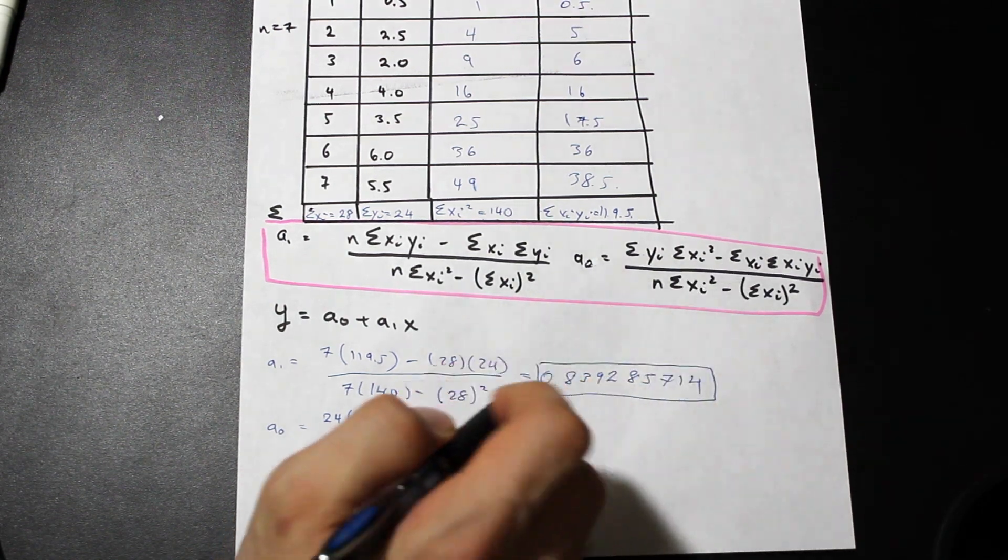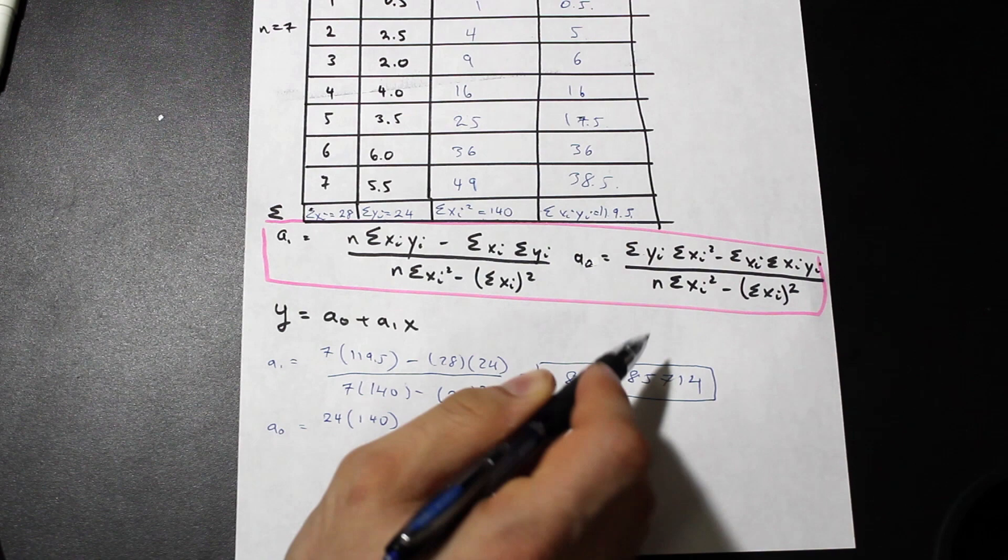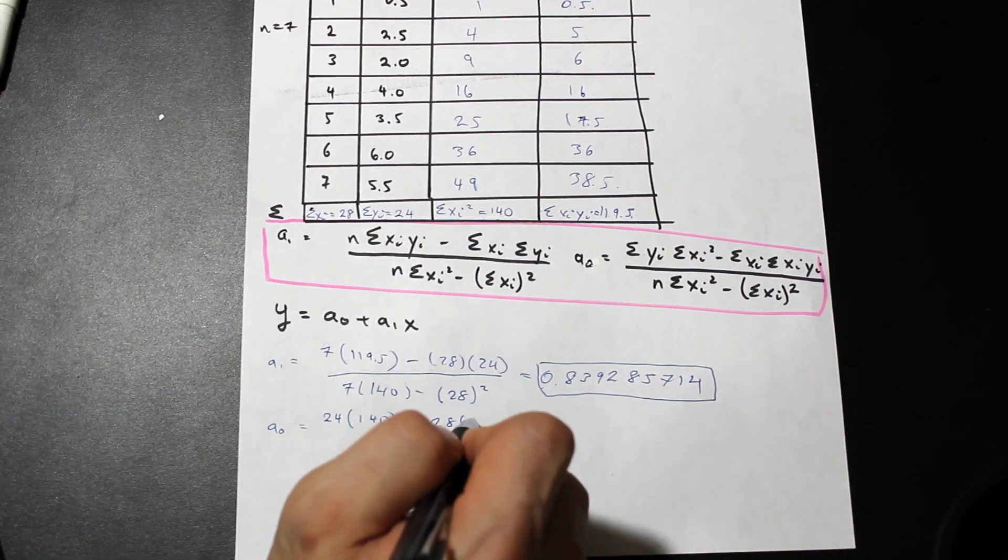Minus summation of xi, 28, summation of xi yi, that's 119.5.